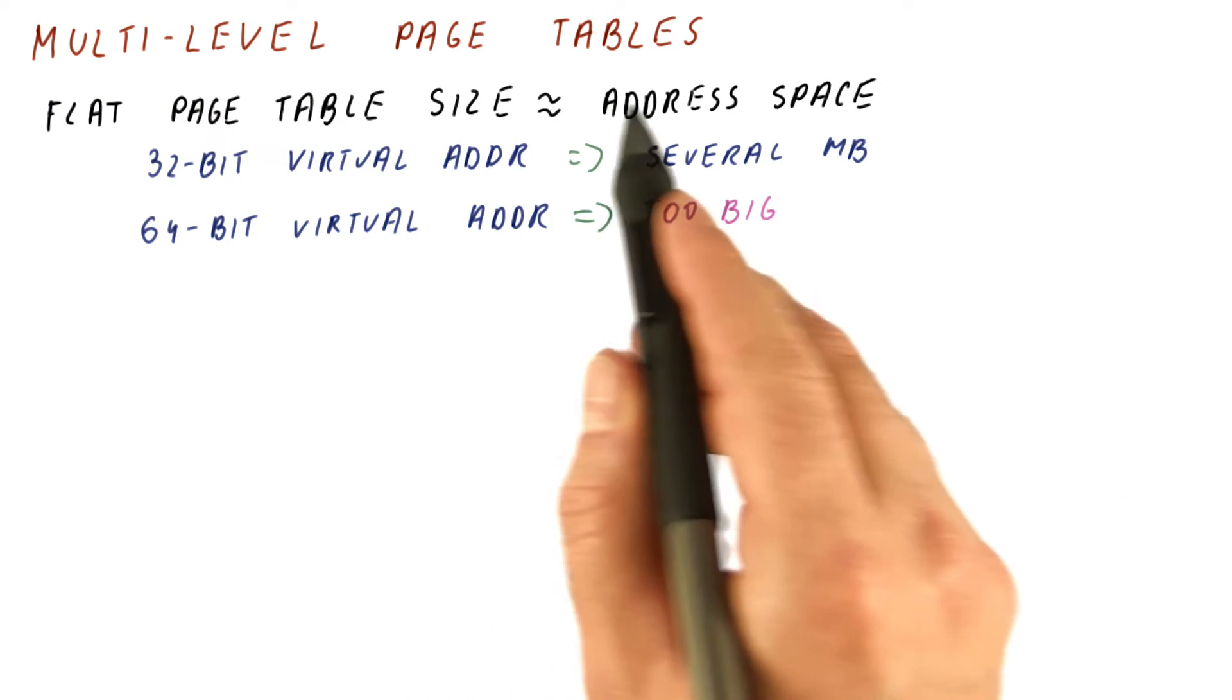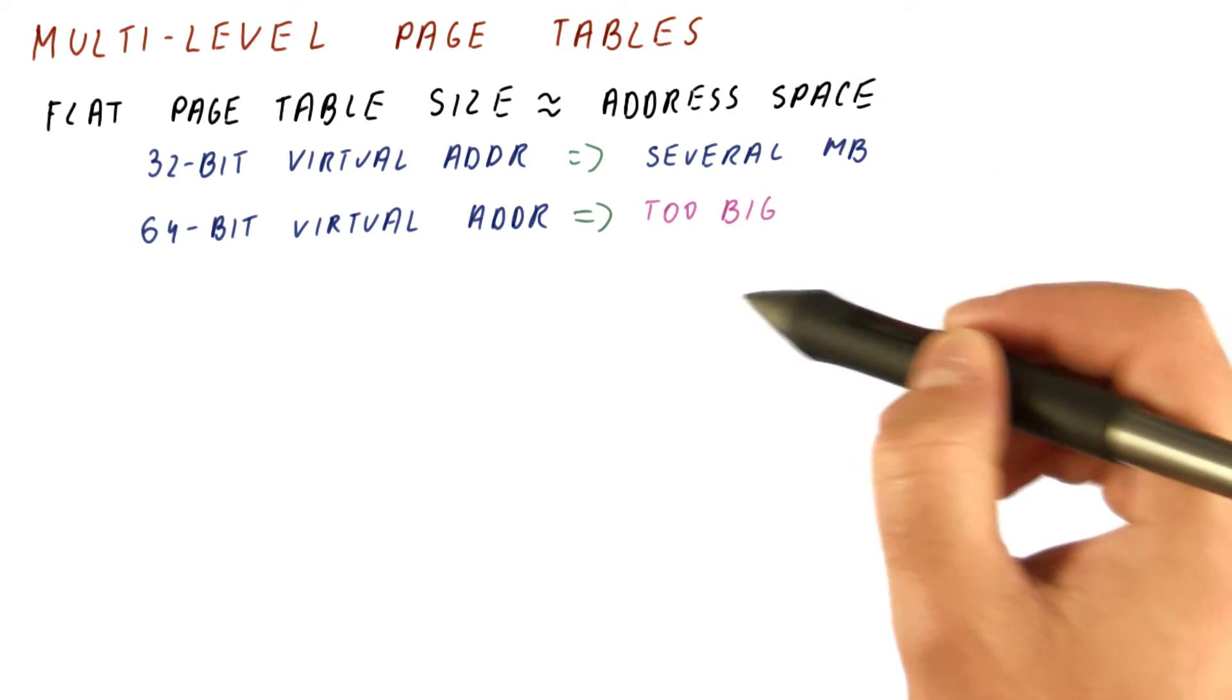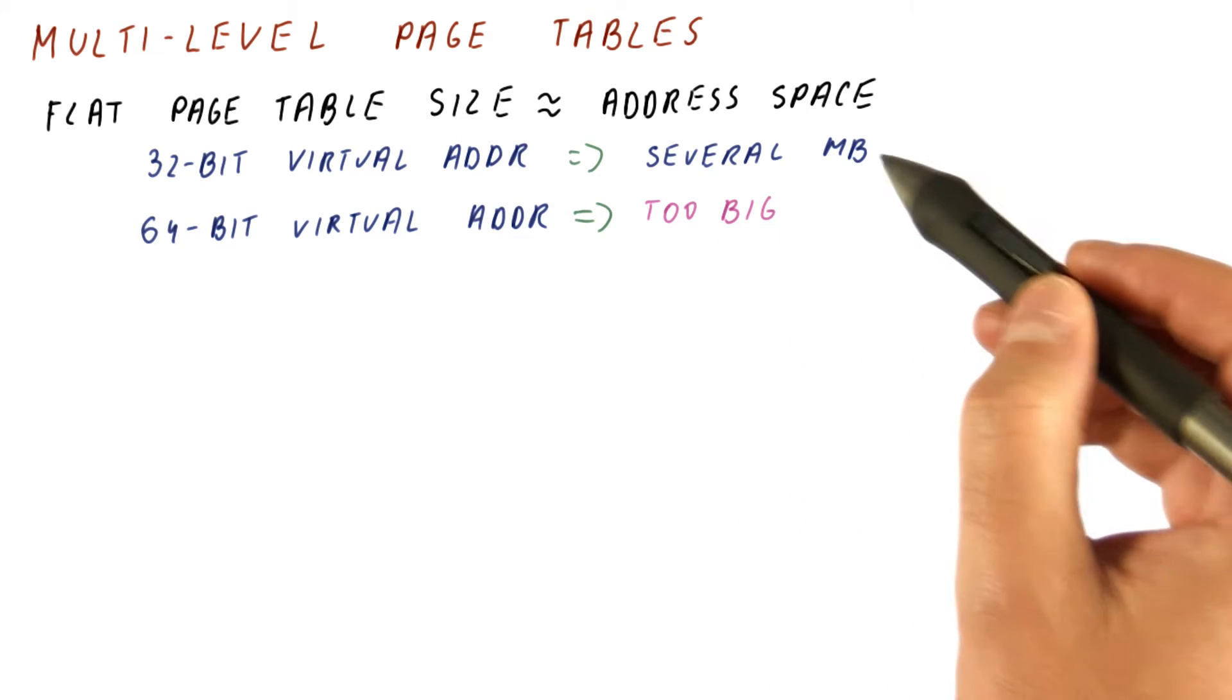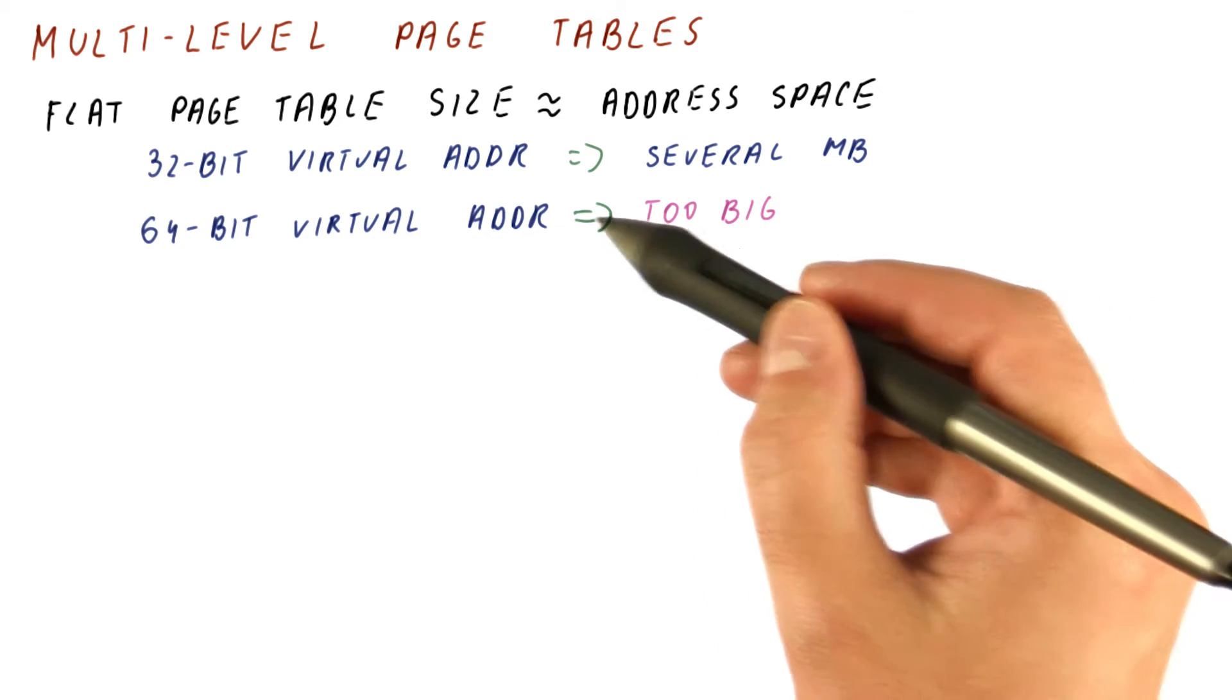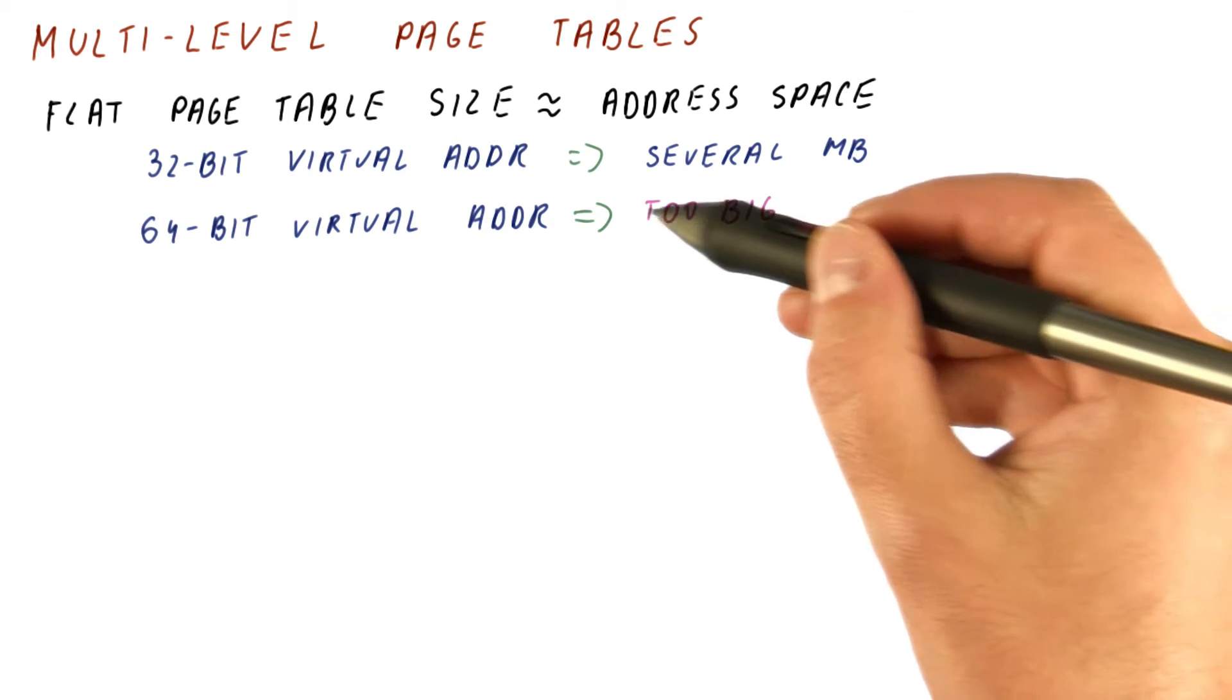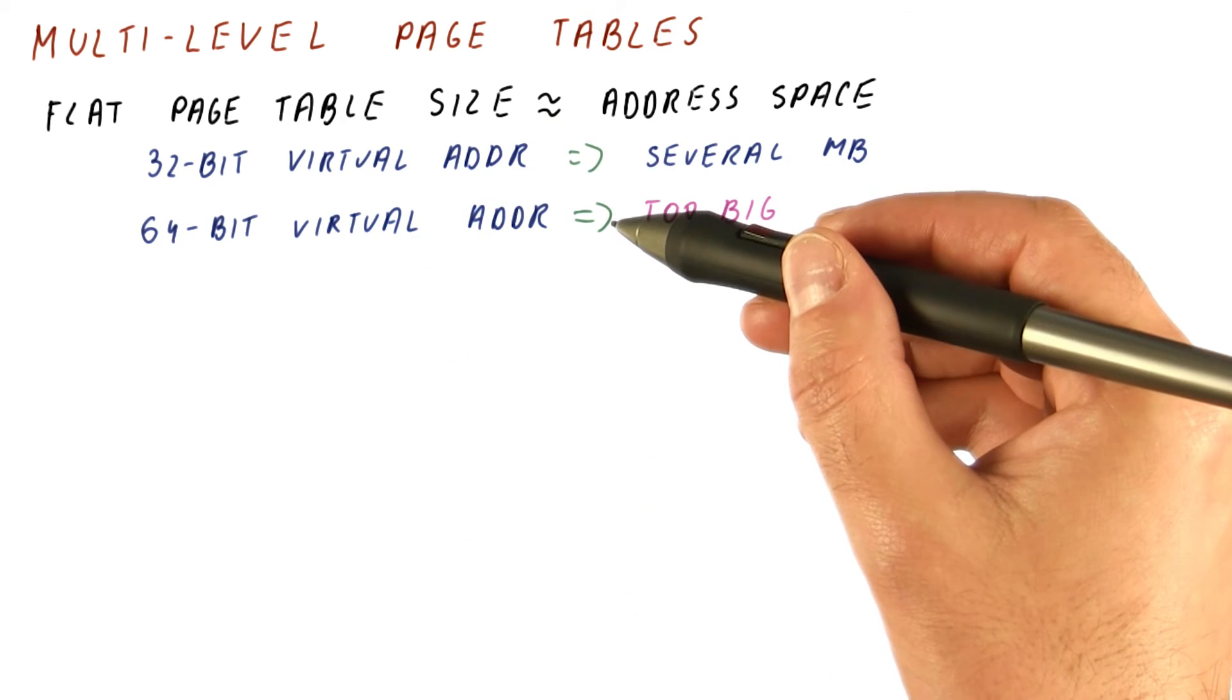So multi-level page tables are designed to try to overcome both of the problems. We want the overall size of the page table to be proportional to how much memory we are using, and we want our page table to work even for 64-bit virtual addresses, as long as the program is actually not using the entire 64-bit virtual address space, which no program really does.